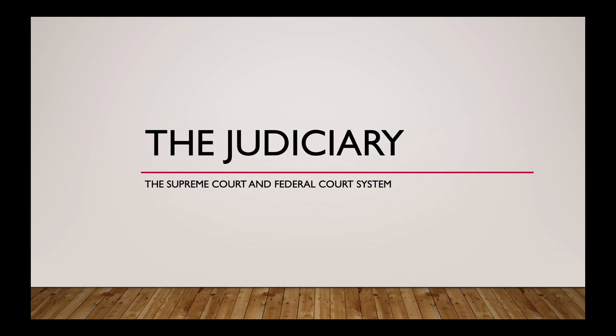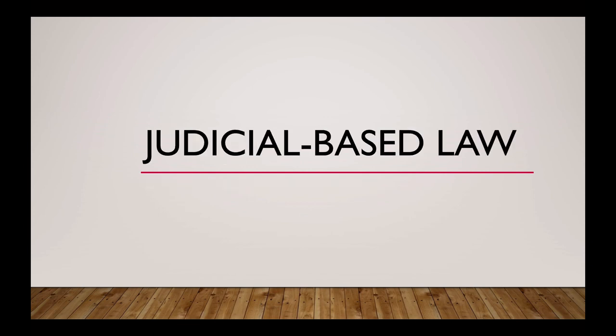The constitutional instructions tell the Supreme Court that it can create inferior courts at its discretion, so that's where the entirety of the federal court system comes from. But let's take a step back and talk about judicial-based law. We've been talking about different kinds of law: legislative law created by Congress, regulatory law issued by the executive branch, and judicial-based law — the ways courts have interpreted the law and how the Constitution interacts with it.